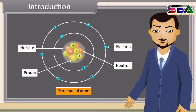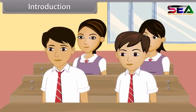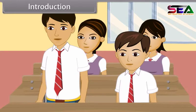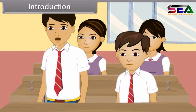A typical atom consists of a nucleus of protons and neutrons, with electrons orbiting this nucleus. A student asks: all objects around us are made up of different materials — how is it possible that atoms are the fundamental unit of matter?